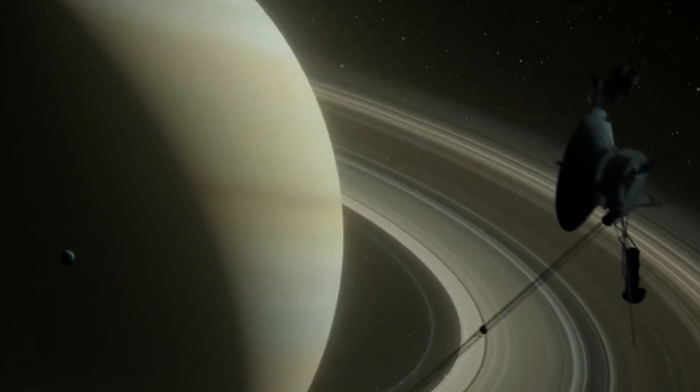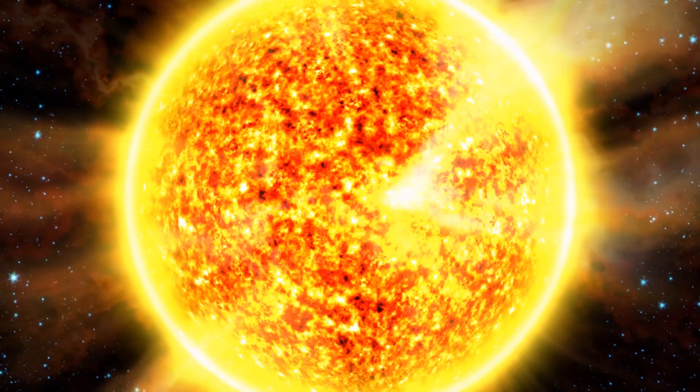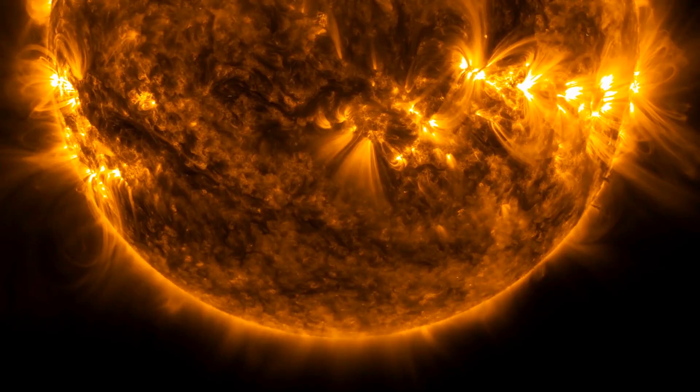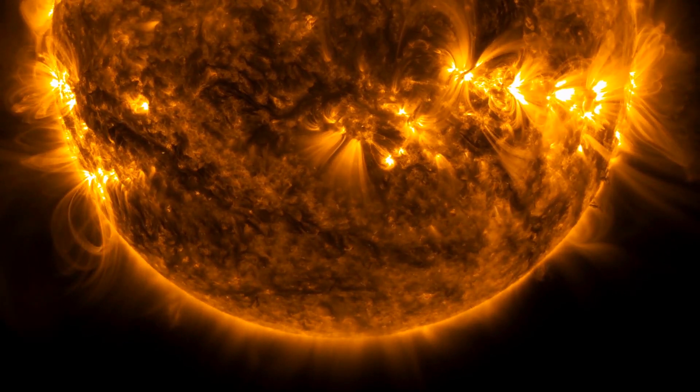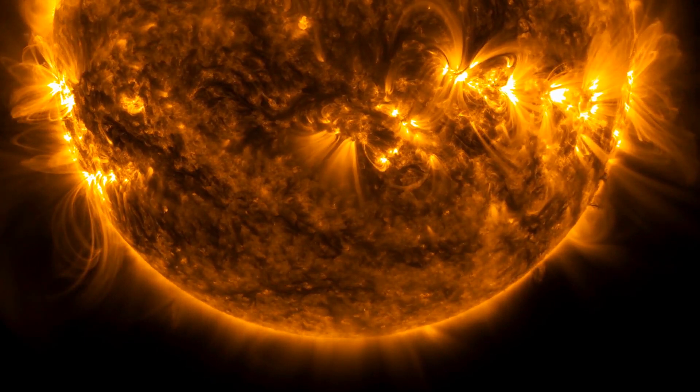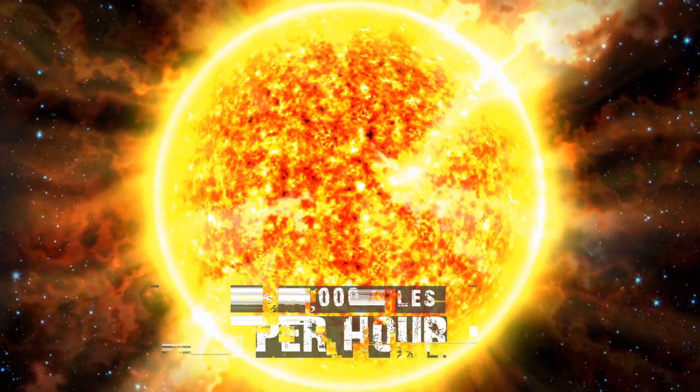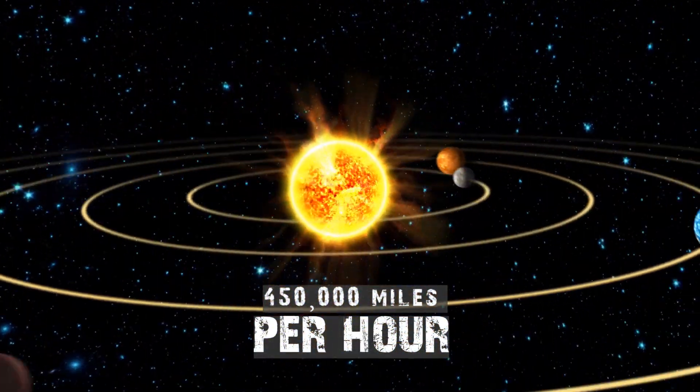To understand Voyager 2 recent discoveries, you must grasp how the sun operates. Contrary to popular belief, the sun isn't a calm, glowing orb. Instead, it's a nuclear furnace orbiting the galactic core at 450,000 miles per hour.